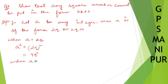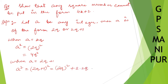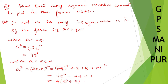When a is equal to 2q plus 1, then a squared is equal to (2q plus 1) whole squared. We can expand this as 4q squared plus 4q plus 1. Taking 4 common gives 4(q squared plus q) plus 1.